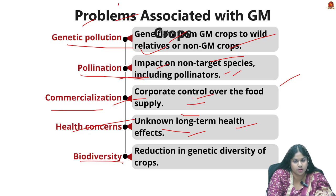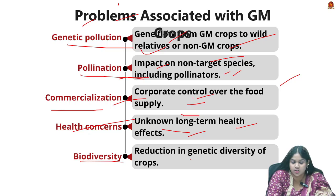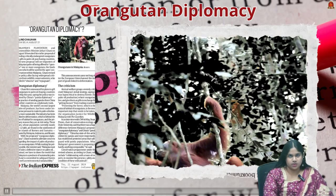Finally, biodiversity — the widespread adoption of GM crops can lead to a reduction in the genetic diversity of crops, as farmers may favor GM varieties over traditional or local ones.